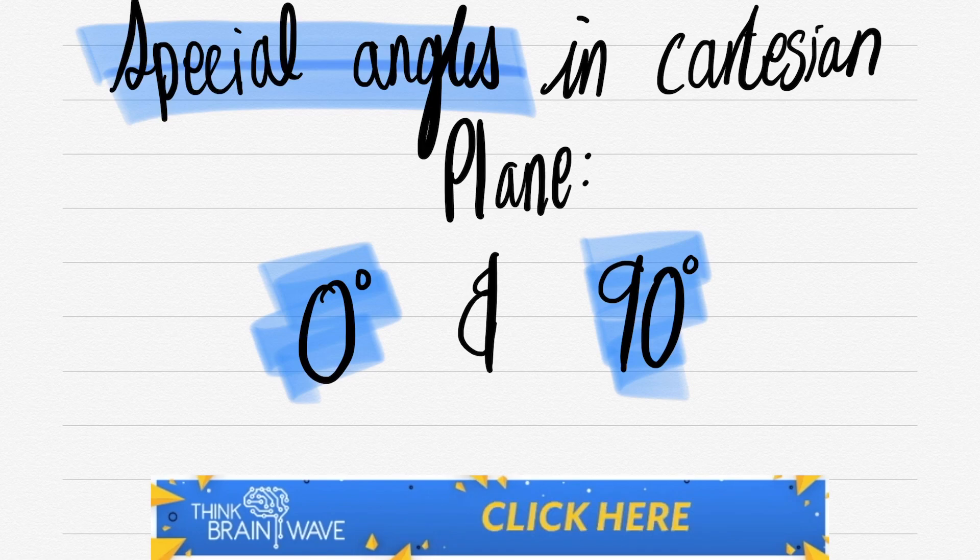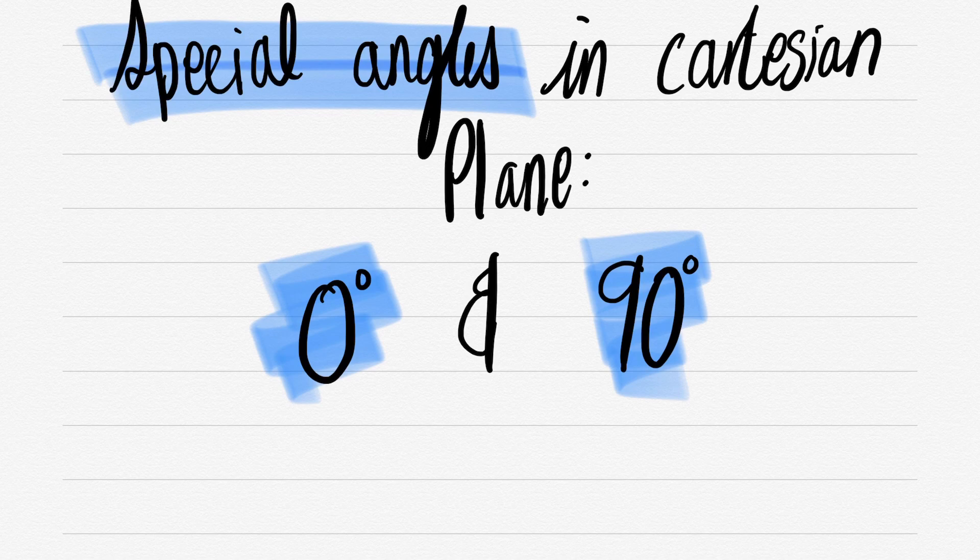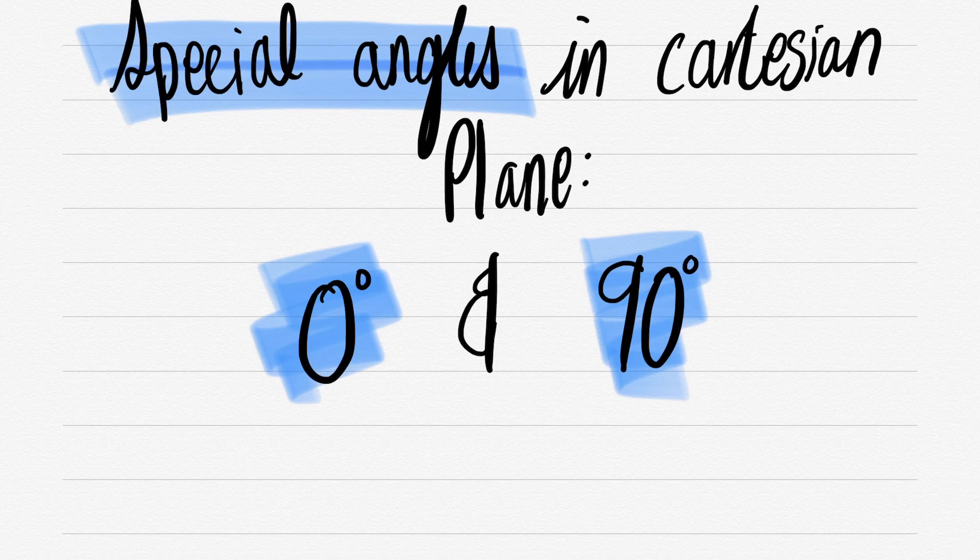In this case we will be looking at the sine graph and the cosine graph. Now the sine graph and cosine graph at 0° and 90° act totally polar oppositely. The sine graph at 0° is actually equal to 0, whereas the cosine graph of 0° is equal to 1.